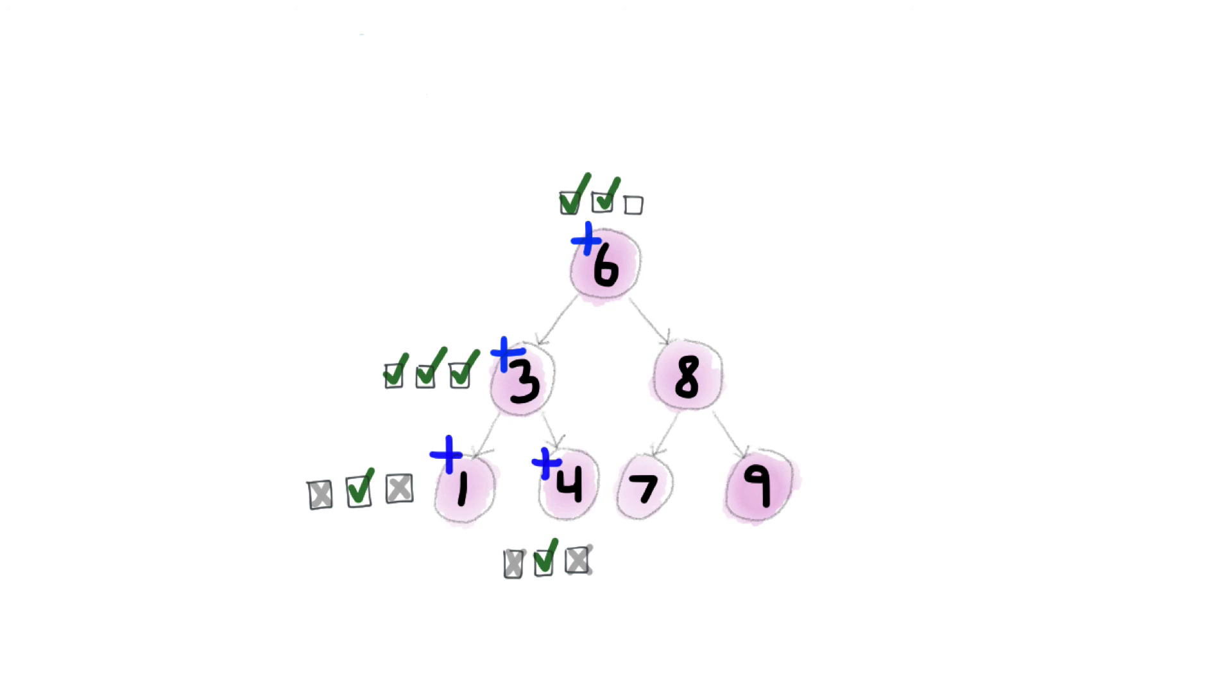Then call the procedure on six's right child, eight, which calls the procedure on its left child, seven, which has no left child. Push seven. No right child. Seven is done, and so is the first step of eight.